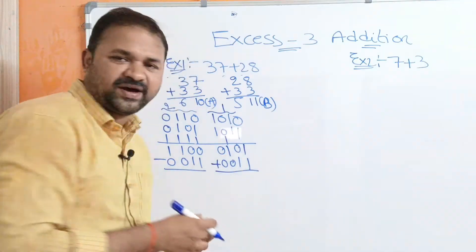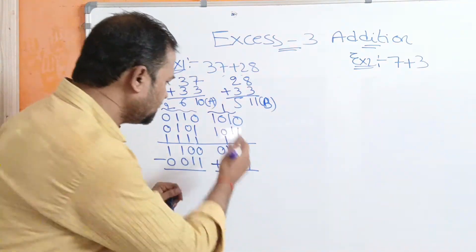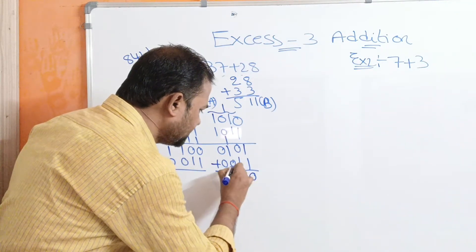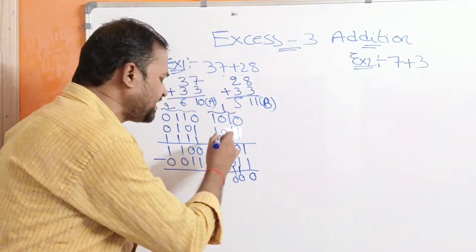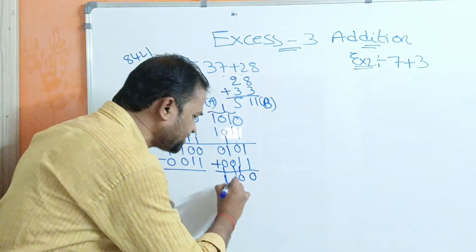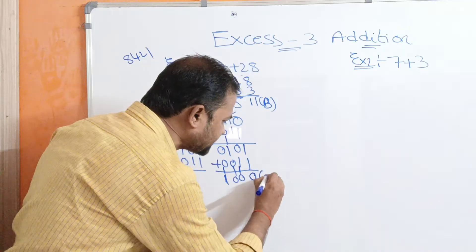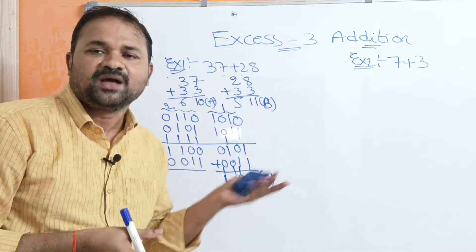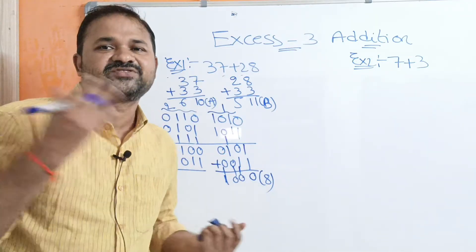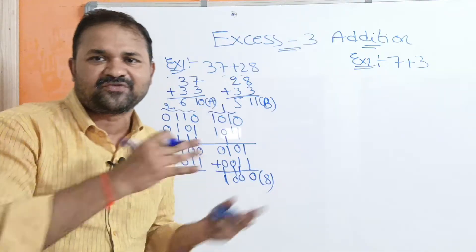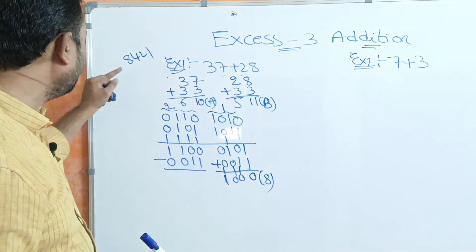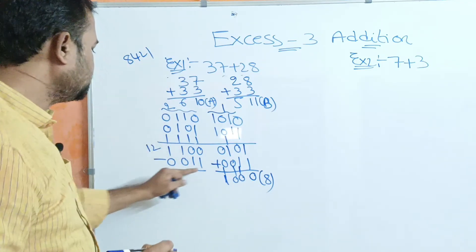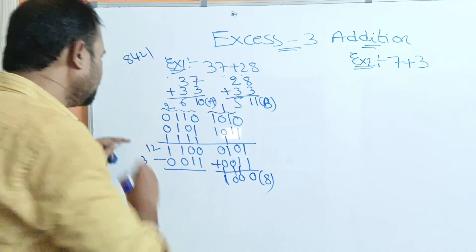For the group where we add 3: 0101 plus 0011 gives 1000. For the subtraction group: 11000 in decimal is 12, and 0011 in decimal is 3, so 12 minus 3 equals 9.